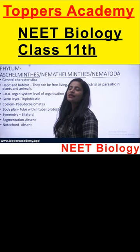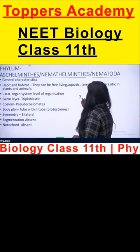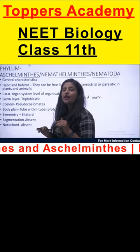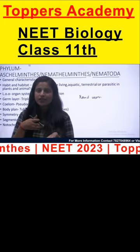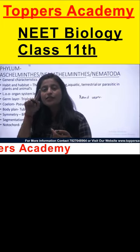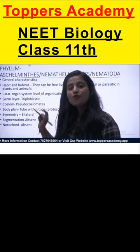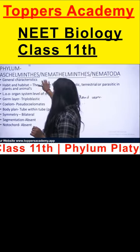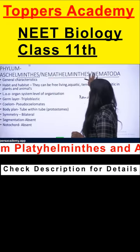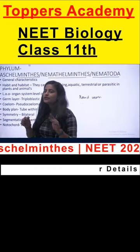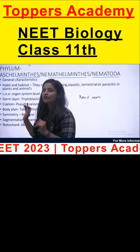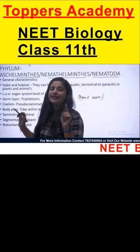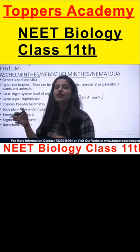The common name of Aschelminthes is roundworm. We call them roundworm because when we dissect this organism, we see a circular, round appearance — like rings. They are also called Nematoda or Nemathelminthes; these are all the same names, just like children having different nicknames. The common name roundworm is based on their internal physiology observed during dissection.